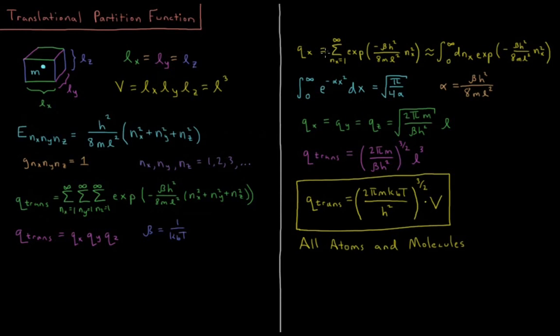If we focus on qx, that's where we're going to do the sum from nx equals 1 to infinity of e to the minus beta h squared over 8ml squared nx squared. We can approximate this as an integral from 0 to infinity over nx of e to the minus beta h squared over 8ml squared times nx squared. This looks like an integral from 0 to infinity of e to the minus alpha x squared dx, where alpha is beta h squared over 8ml squared. That integral equals the square root of pi over 4 alpha.